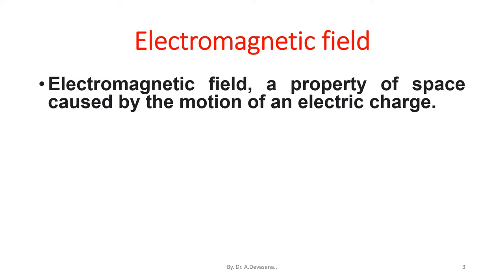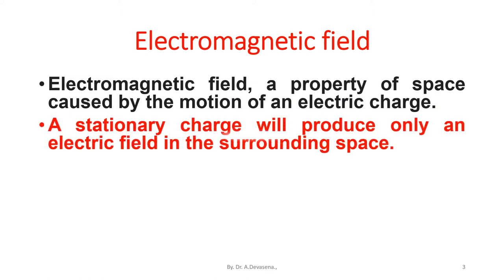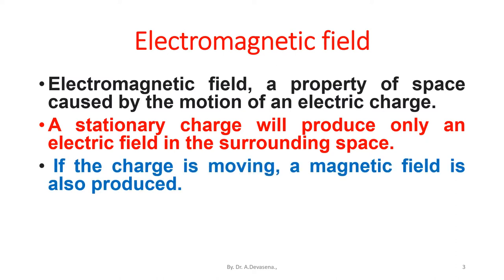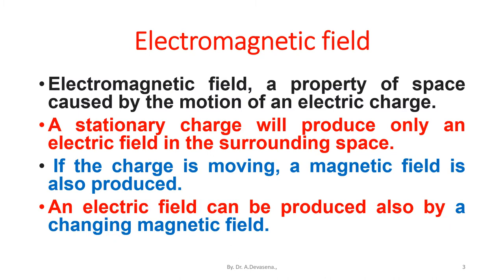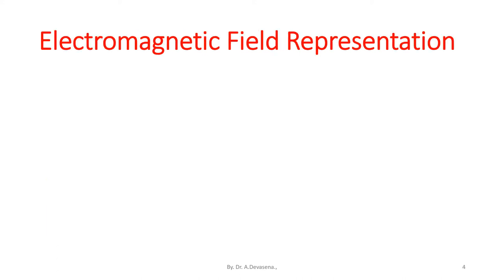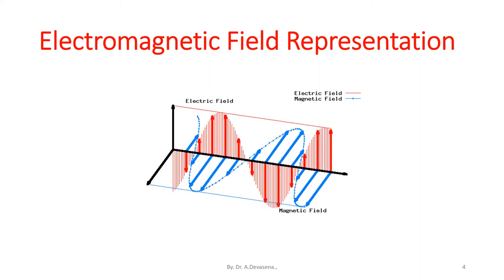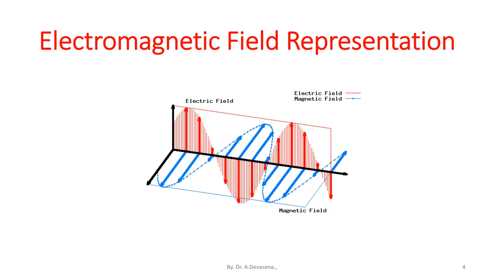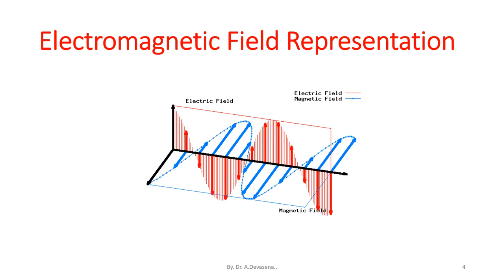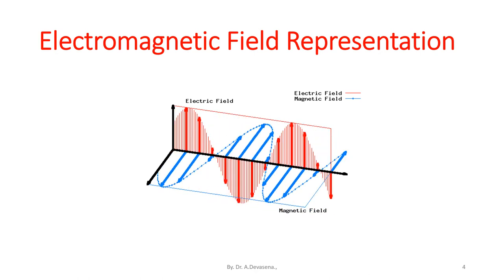An electromagnetic field is a property of space caused by the motion of an electric charge. A stationary charge will produce only an electric field in the surrounding space. If the charge is moving, a magnetic field is also produced. An electric field can also be produced by a changing magnetic field. Here the electromagnetic field is represented: the blue color wave represents the magnetic field and the red color wave represents the electric field.